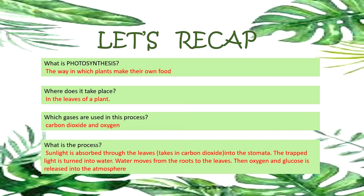Where does it take place? It takes place mainly in the leaves of the plant. What gases are used in the process? Only carbon dioxide and oxygen are used. The plant leaves take in carbon dioxide and let out oxygen.